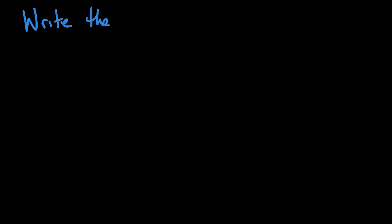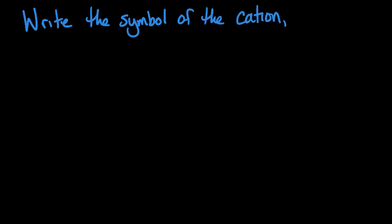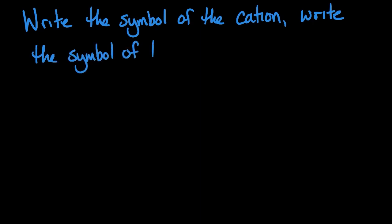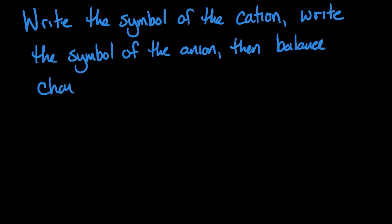So what if we wanted to write the chemical formula of an ionic compound from its name? To write the formula of a binary ionic compound, first we write the symbol of the cation, then we write the symbol of the anion. We're going to use subscripts in the formula so that the total charge of the compound is zero.